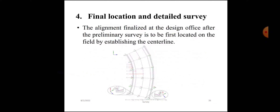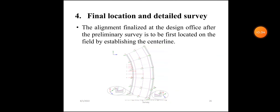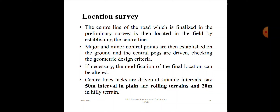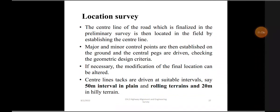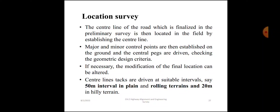Final location and detail survey: the alignment finalized at the design office after the preliminary survey is first located in the field by establishing the centerline. In the location survey, the centerline finalized in the preliminary survey is located in the field. Major and minor control points are established on the ground and the central pegs are driven. Geometric design criteria are checked and, if necessary, the final location can be altered. Centerline stakes are driven at suitable intervals — say 50-meter intervals in plain and rolling terrain, and 20-meter intervals in hilly terrain.